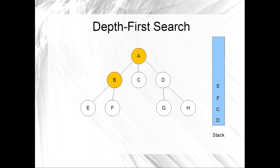Since the stack is not empty, we are going to have another iteration. That iteration begins by popping E off of the stack and marking it. Then we push all adjacent unmarked vertices onto the stack — there are none. Thus ends this iteration. Since the stack is not empty, we will have another iteration. That iteration begins by popping F off of the stack and marking it. Next, we push all adjacent unmarked vertices onto the stack — there are none.